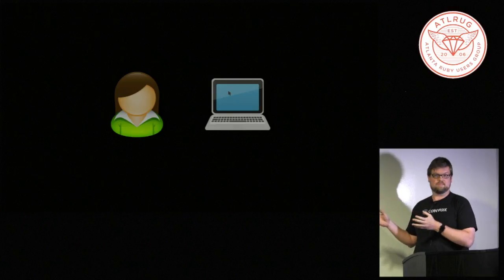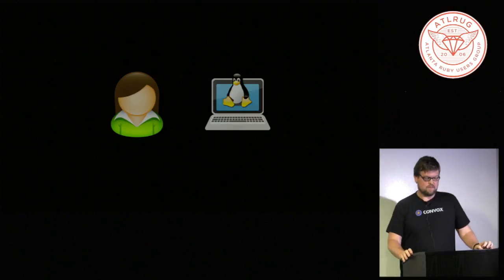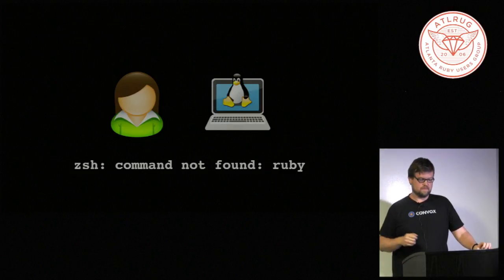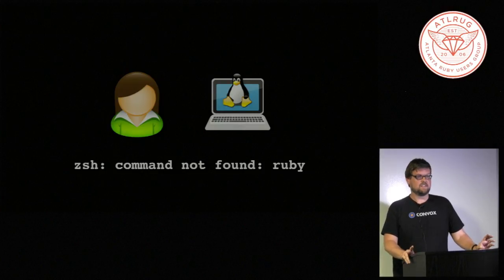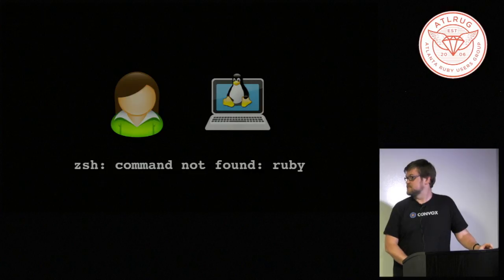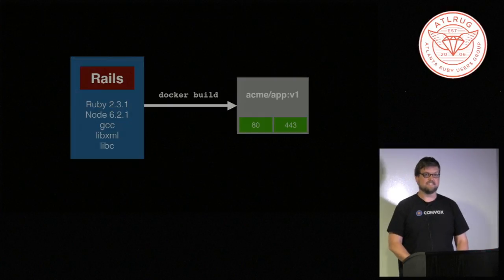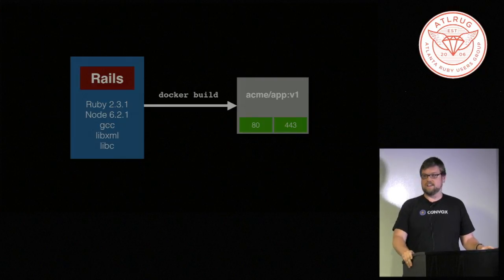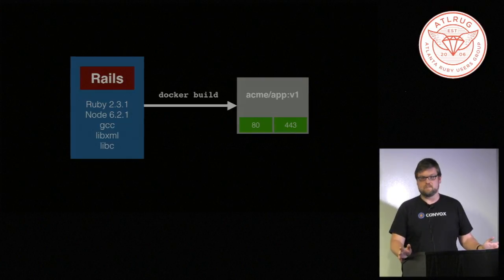This is basically what I would guess 90% of production Rails applications doing serious things look like. The real problem with this setup is that you've solved the production problem, but then Monday comes and you hire a new engineer. You give her a brand new MacBook with no software on it, and she says she's going to run Linux on it. She clones the Rails application and runs into it: what version of Ruby are we using? Is there a list of dependencies somewhere? They need to solve the whole problem all over again.